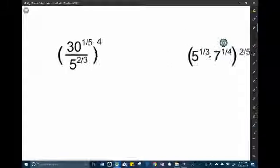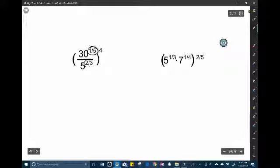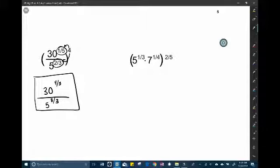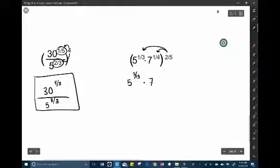Okay. With this one, you cannot use that trick because these exponents are not the same. So not trickable with this. Instead, just distribute that power of 4. So 30 to the 4 fifths all over 5 to the 8 thirds. Different bases and everything like that. So this is actually where your final answer is. Okay. Distributing the exponent. So 5 to the 2 fifteenths times 7 to the 2 twentieths. Which is the same as 7 to the 1 tenth. So you can reduce fractions if you do come across those.